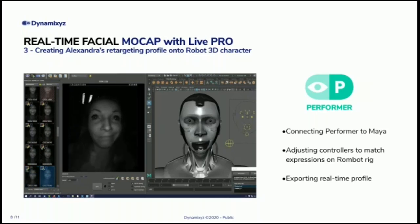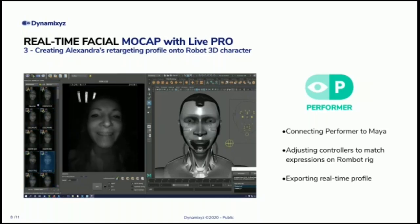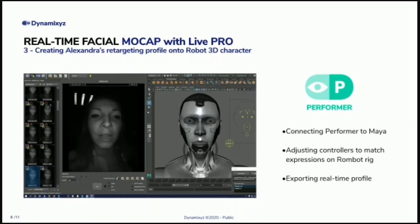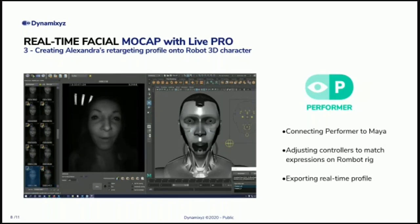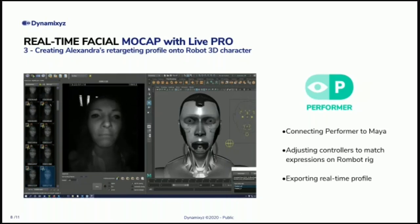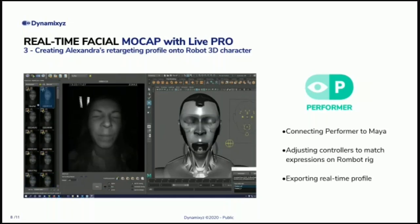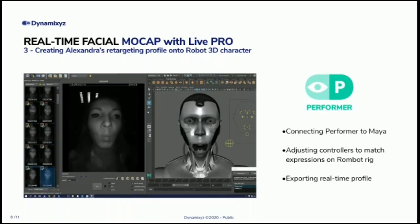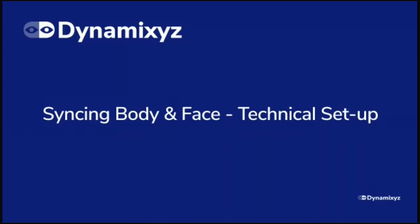Then comes the training of the retargeting part. First you tell the system what your character is made of — whether you're using blend shapes or bones, we make no assumption. Then you make key poses for all the expressions you previously annotated: if my actor smiles like that, I want my character to smile like that. You build correspondences to train the retargeting. Once done — again only once for the whole project — you build a retargeting profile and you're good to go.